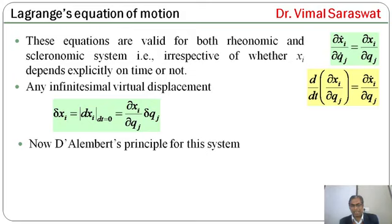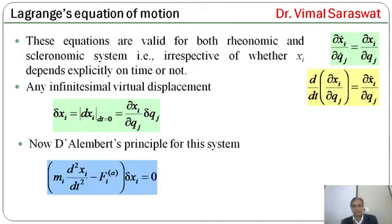Now, D'Alembert's principle for this system. D'Alembert's principle states: Σ (mi * d²xi/dt² - Fi_applied) * δxi = 0.